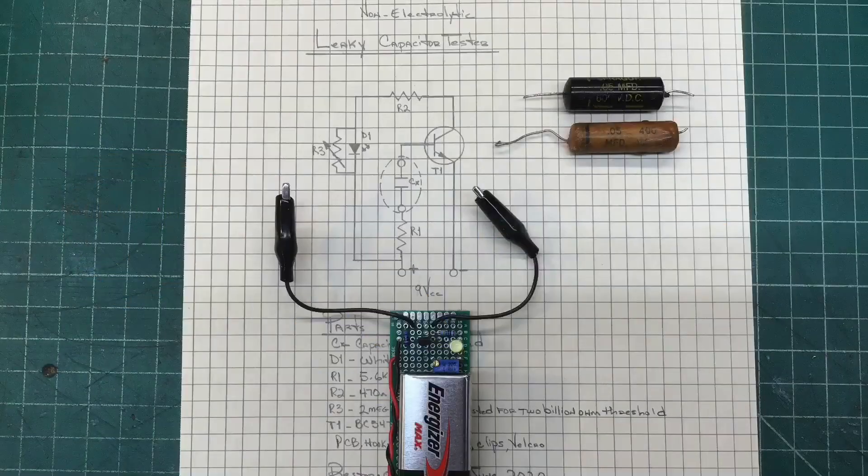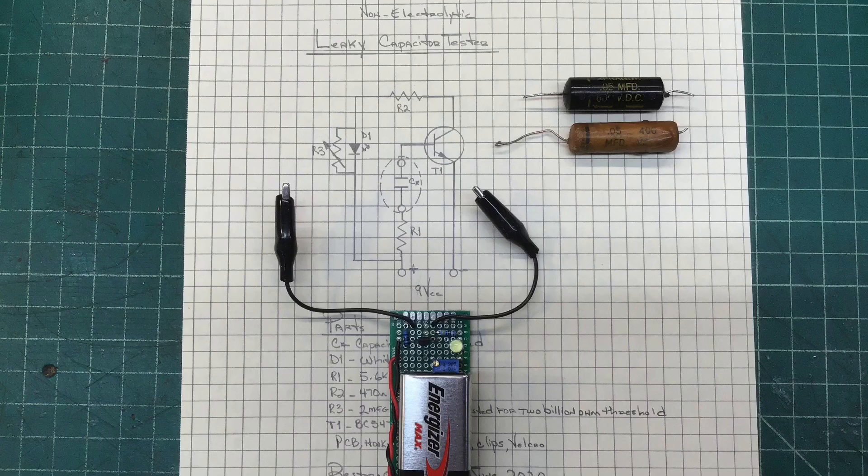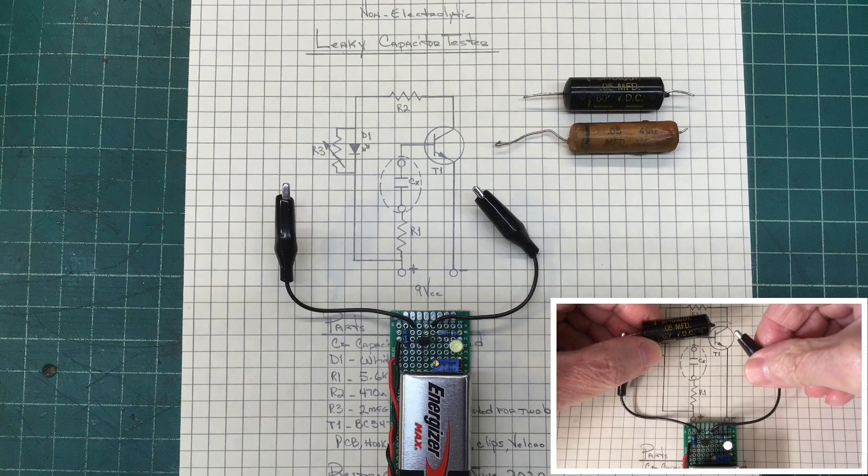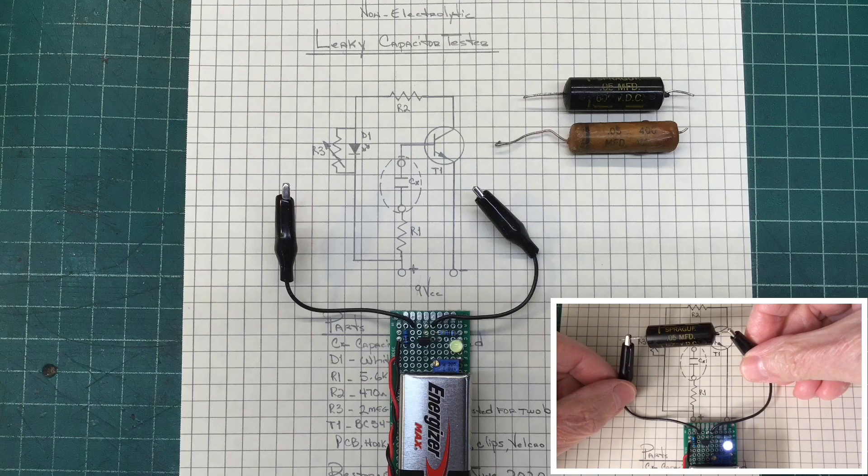I went back and took a look at some of the capacitors that I removed from the RCA 8X 541 and I was interested in just seeing how bad the insulation resistance was and did a little research on that as well. I thought I would share with you guys.